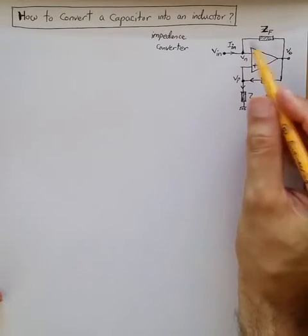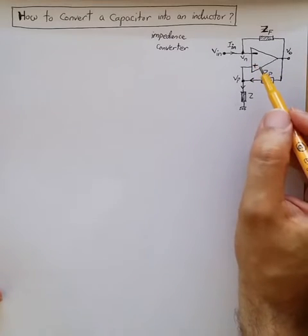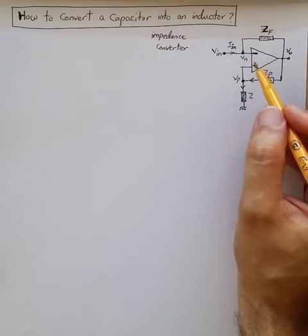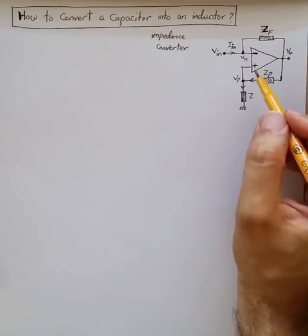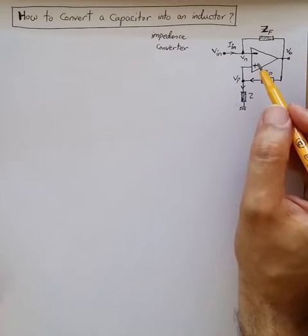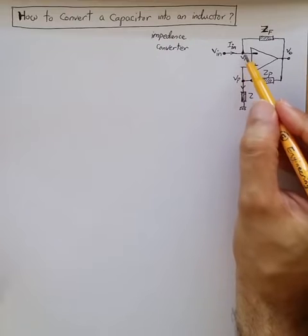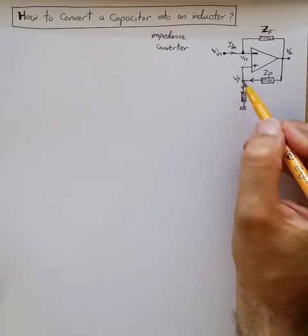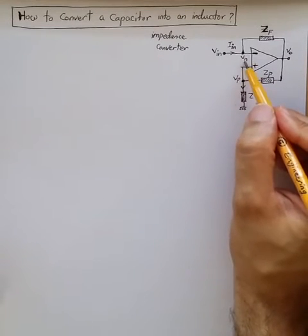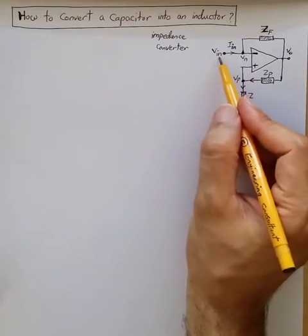This op-amp is in negative feedback configuration as seen here. We also assume that the op-amp is in linear region of operation so that it can enforce the virtual short between the positive input terminal and negative input terminal, so that VP is equal to VN and then equal to VIN.